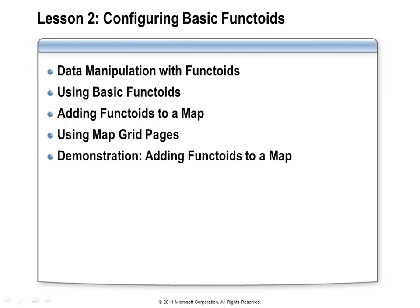The linking capability of maps is very nice by itself, but we need more than the ability to simply copy values from source to destination. Sometimes we need to alter values or combine them as they're copied over. The XSLT specification left open the option of adding functionality to an XSLT processor, and the BizTalk mapper takes advantage of that by defining extra functions called functoids.